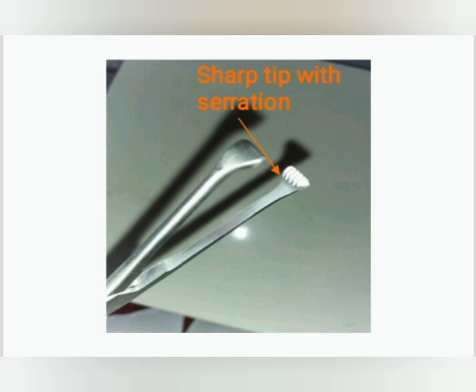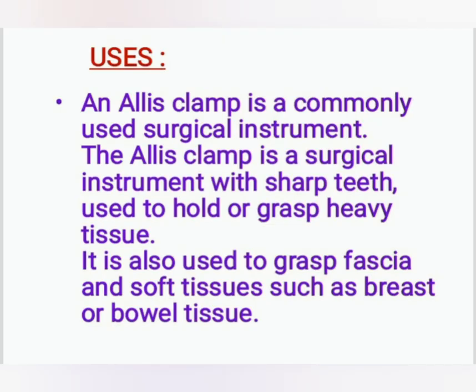The sharp tip of the Alice forcep is very useful during procedures for grasping and holding tissue. The Alice clamp is a commonly used surgical instrument with sharp teeth, used to hold and grasp heavy tissue. It is also used to grasp fascia and swab tissues such as breast and bowel tissues.